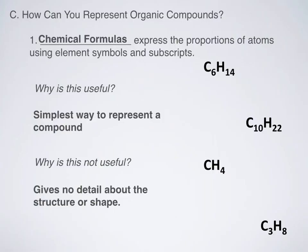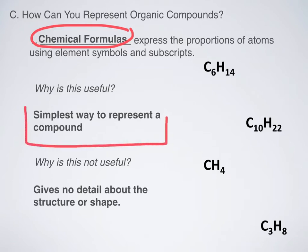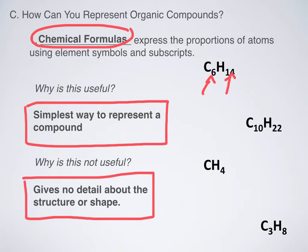So how can we represent organic compounds? There are a couple of ways of doing it. The first is using just regular old chemical formulas like we've been using — that expresses the proportion of atoms using elemental symbols and subscripts. Why is this useful? It is the simplest way to represent a compound. Why is this not useful? It gives us no detail about the structure or shape. Structure and shape are necessary — if you have a different structure or shape, you could have a whole different type of compound that does a whole different type of thing.